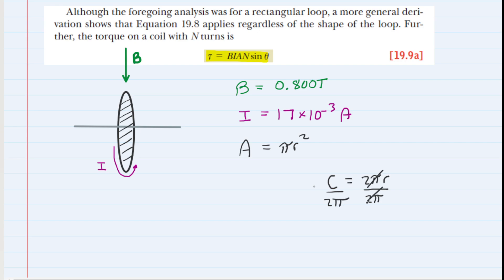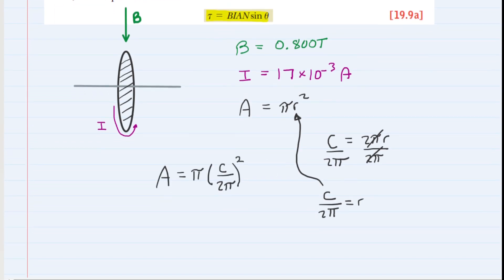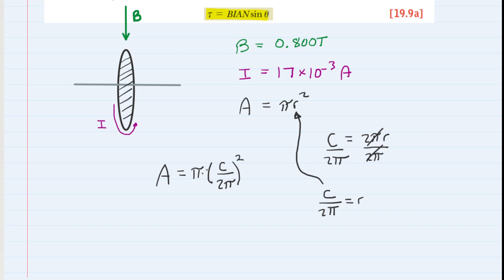We're going to solve for radius and divide both sides of this equation by 2 pi. These 2 pi's on the right-hand side cancel. The circumference divided by 2 pi equals the radius. We're going to plug that expression in for the radius in our area equation. Then we can plug in the circumference value of 2 meters.